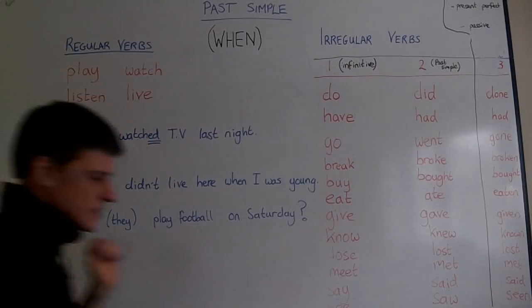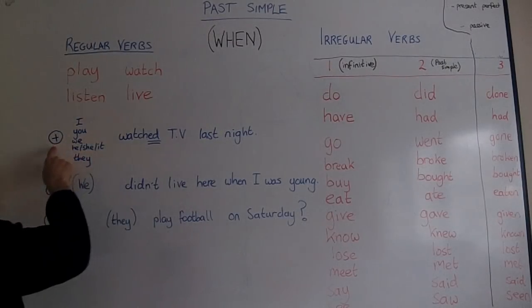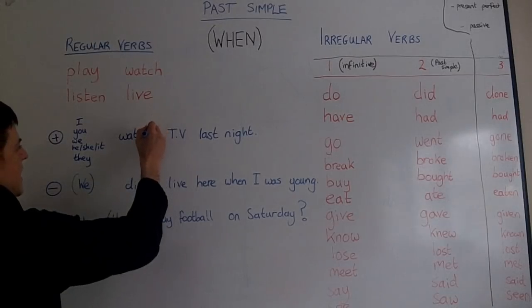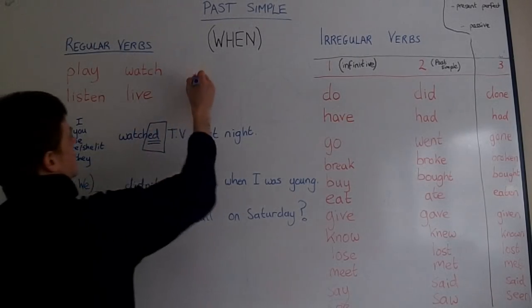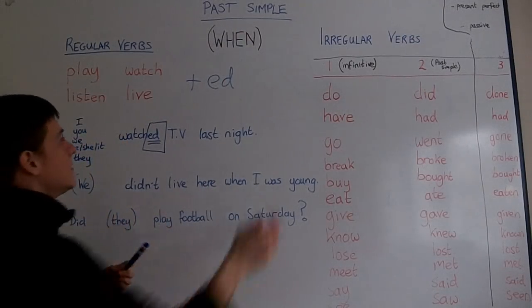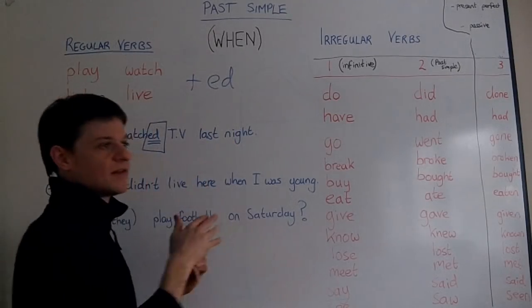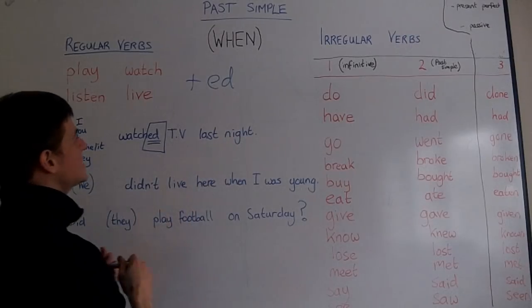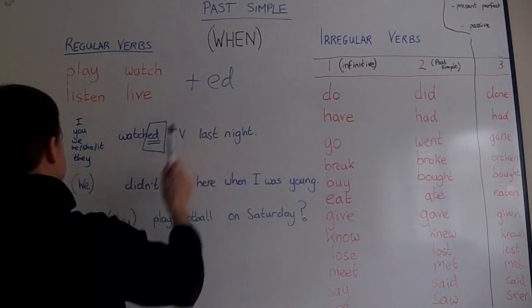Regular verbs are simple in the past tense. If we want to say something positive in the past, we just need to add ED to make it past simple. By the way, we use past simple when we say when something happened — yesterday, three weeks ago, last night. That's when we use past simple. And we just add ED.